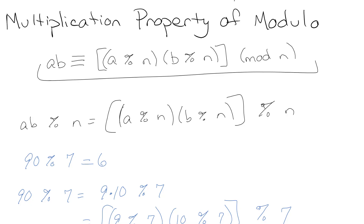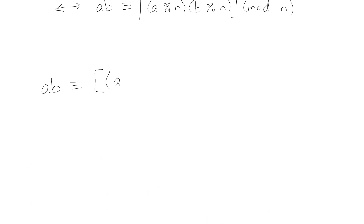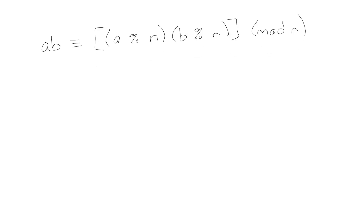There's this multiplication property of modulo which I just proved, but nobody seems to agree on what all these different modulo properties are called. There are a lot of different versions of the multiplication property of modulo, and one of them is really important because it allows us to find modulos of really big numbers. I'm doing this because eventually I want to prove RSA encryption and why it works, and in order to do that I have to use all these modulo theories.